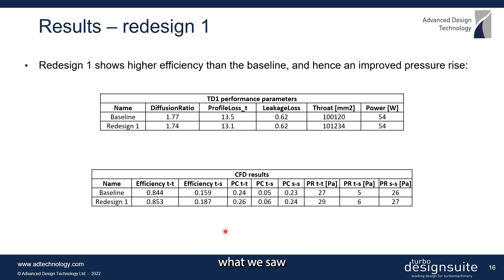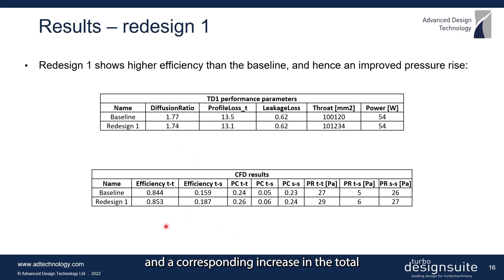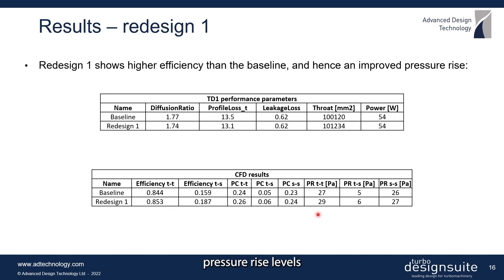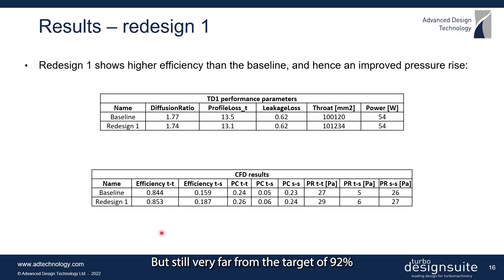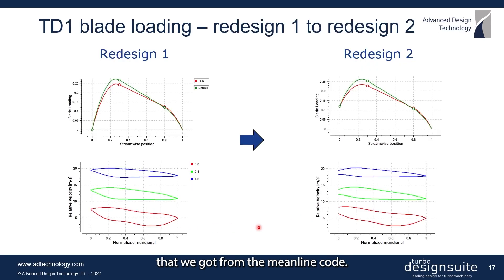By doing this we saw a slight reduction in diffusion and profile loss, and a corresponding increase in total-to-total efficiency and pressure rise levels in the CFD results. However, the performance was still very far from the target of 92% that we got from the mean line code.